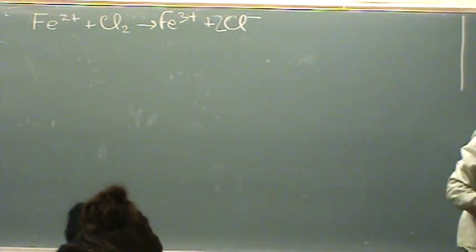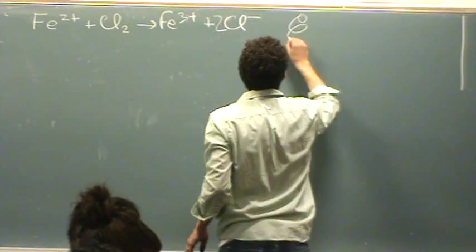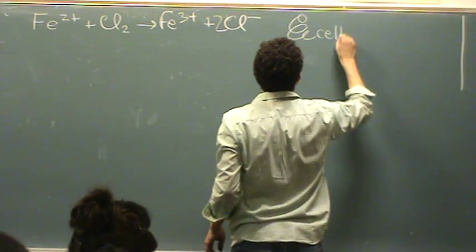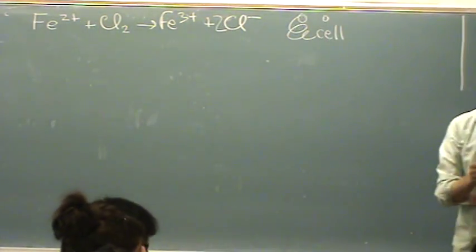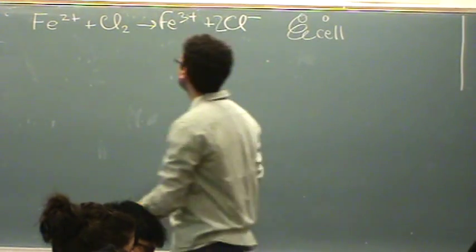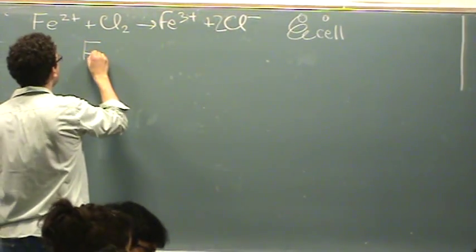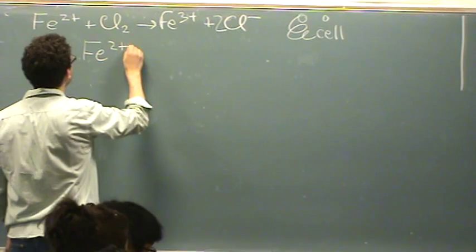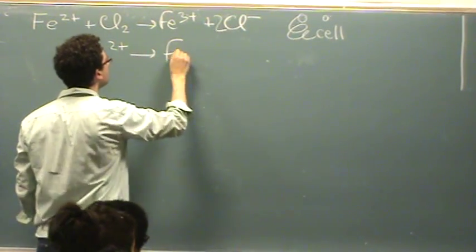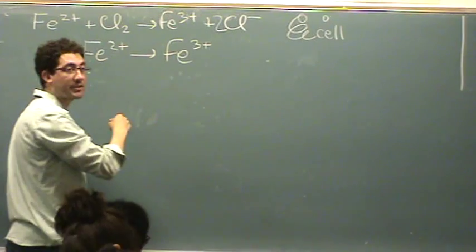Okay, let's find the E cell here from the standard reduction potential. So what you do is, on your paper, just write out the reduction, the redox half reactions.